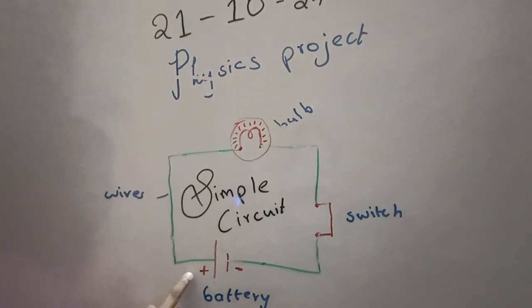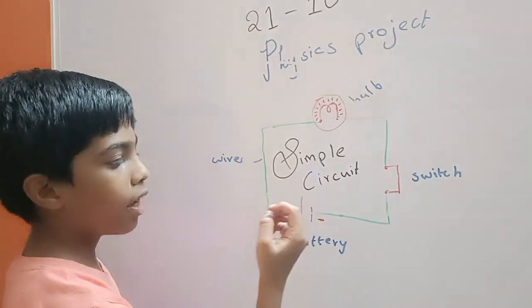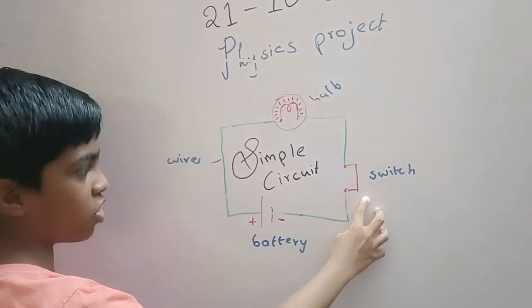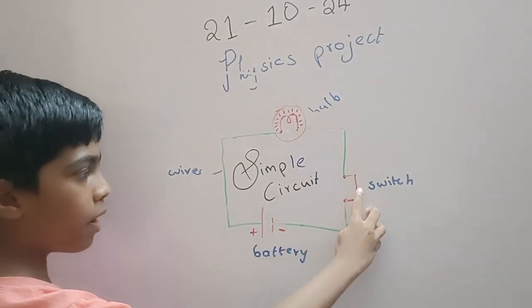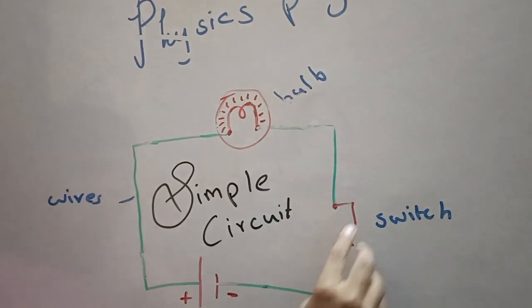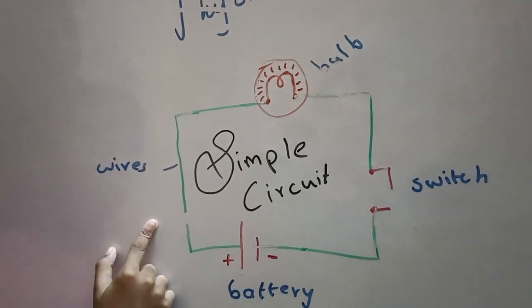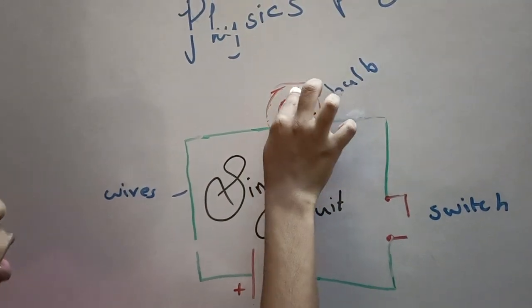The battery supplies electricity to all the parts. If the switch is in on position then the bulb glows. But if the switch is in off position or if there is any cut in the wires then the bulb won't glow.